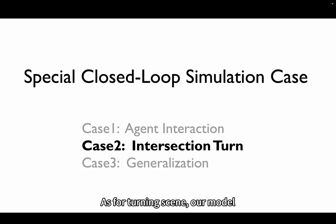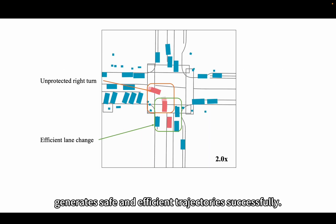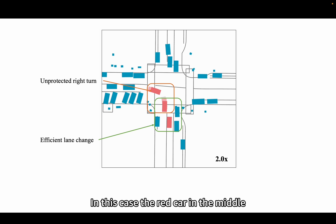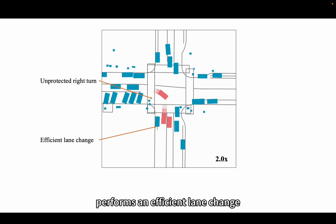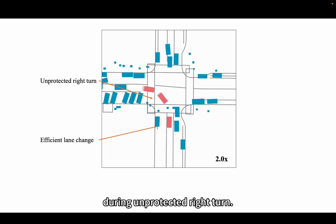As for turning scene, our model generates safe and efficient trajectories successfully. In this case, the red car in the middle performs an efficient lane change during unprotected right turn.